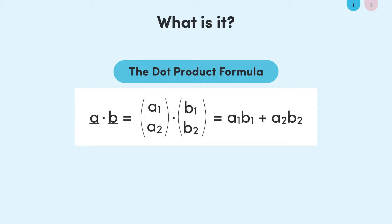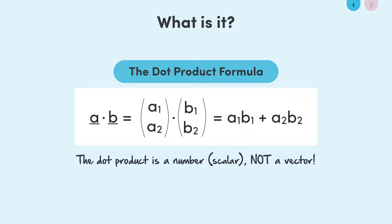Pretty much, you multiply the first entry of each vector together — that's A1 times B1 — then multiply the second entry of each vector together, which is A2 times B2, and then you add the two resulting numbers to leave you with A1B1 plus A2B2. Remember, A1, B1, A2, and B2 are just going to be some numbers, meaning all we are doing is multiplying and adding numbers.